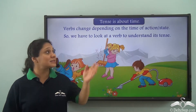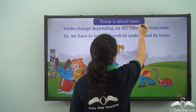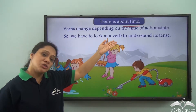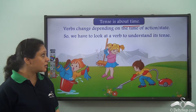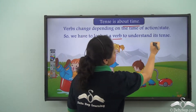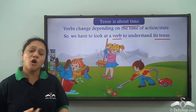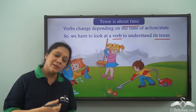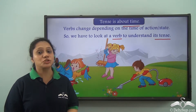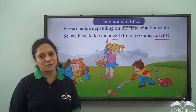We have learnt that tense is about time and that verbs change depending on the time of action or state. So we have to look at a verb to understand its tense. We have already learnt about the simple present tense and the simple past tense. Today, let us learn a little bit more about tenses.